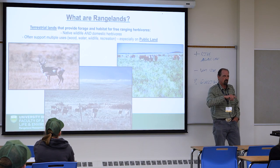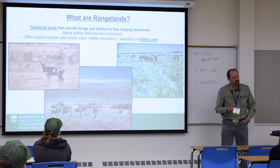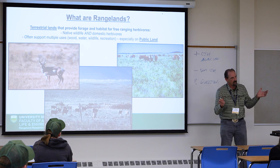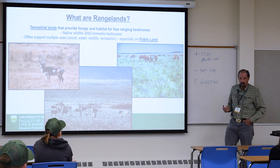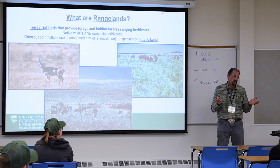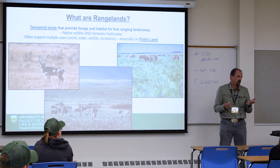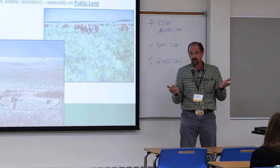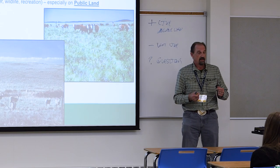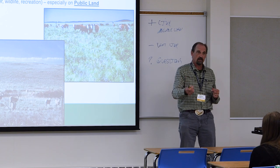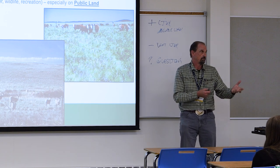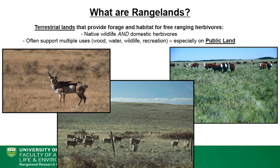I want to start out making sure we're all thinking about the same thing when we talk about rangelands. Most people think of a home on the range where bison are wandering around. But globally, rangelands are defined as any terrestrial lands that provide forage and habitat for free-ranging herbivores — camels, water buffalo, elephants, bison, deer, cows, sheep, yaks. It includes both domestic and wildlife species. And if you think about Alberta, that's pretty much everywhere, excluding urban, industrial, water, and cropland.